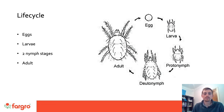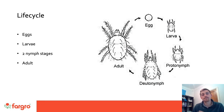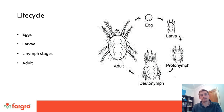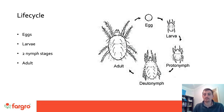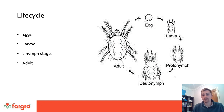Looking briefly at the life cycle of spider mite: firstly the egg, which is small, spherical, and generally found on the underside of the leaf suspended in the webbing. This is followed by a larval stage, two nymph stages — the proto-nymph and the deuter-nymph — and finally the adult. The damaging stages are the larvae, nymph stages, and the adult. To reach each growth stage, the spider mite undergoes a shedding phase, so empty skins are often found present within the crop.